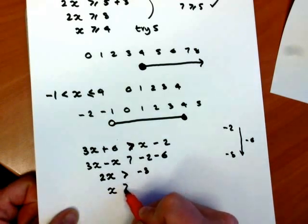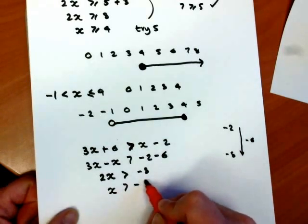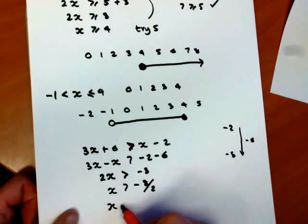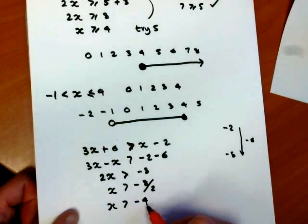Finally, divide through by 2. x is greater than minus 8 divided by 2, which means x is greater than minus 4.